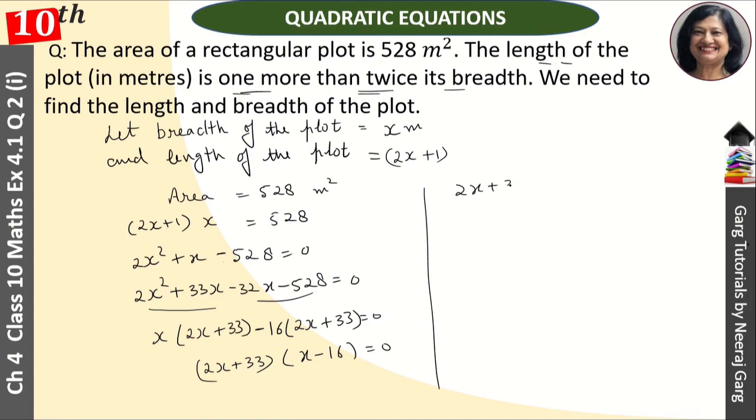Now, 2x plus 33 equals 0, then 2x equals minus 33, and x equals minus 33 upon 2. Because length cannot be negative, we will reject this. This is not possible. Now, x minus 16 equals 0, then x equals 16.